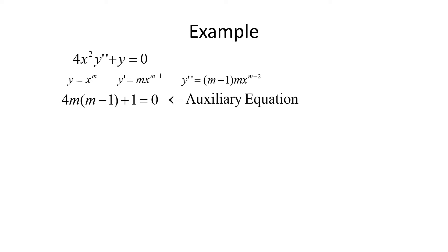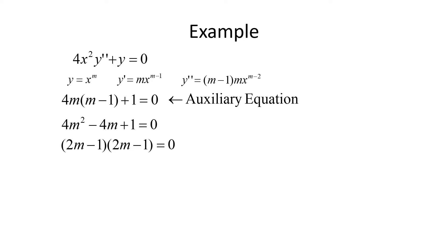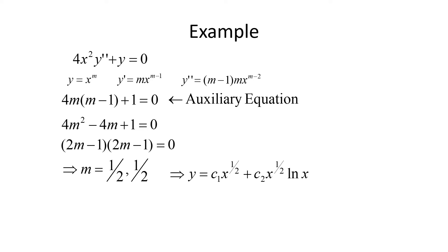Factoring 4m² - 4m + 1 = 0 gives (2m - 1)(2m - 1) = 0, so we get the repeated root m = 1/2. For repeated roots in a Cauchy-Euler equation, we multiply the second term by ln x, giving the solution y = c1 x^{1/2} + c2 x^{1/2} ln x.